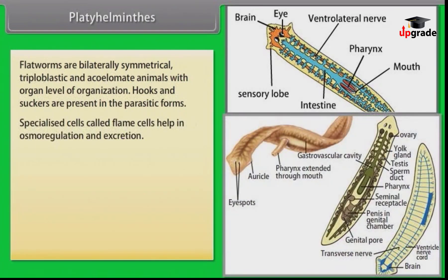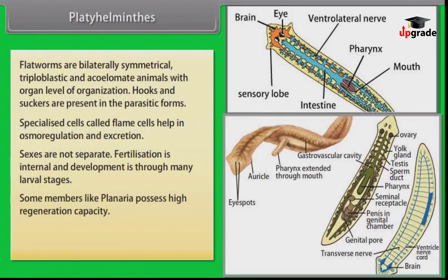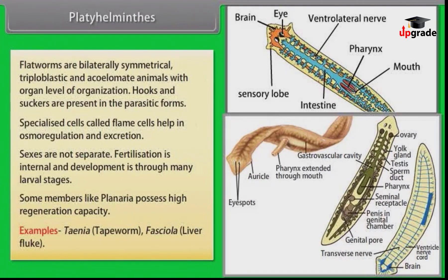Specialized cells called flame cells help in osmoregulation and excretion. Sexes are not separate. Fertilization is internal and development is through many larval stages. Some members like planaria possess high regeneration capacity. Examples: Taenia, that is tapeworm; Fasciola, that is liver fluke.